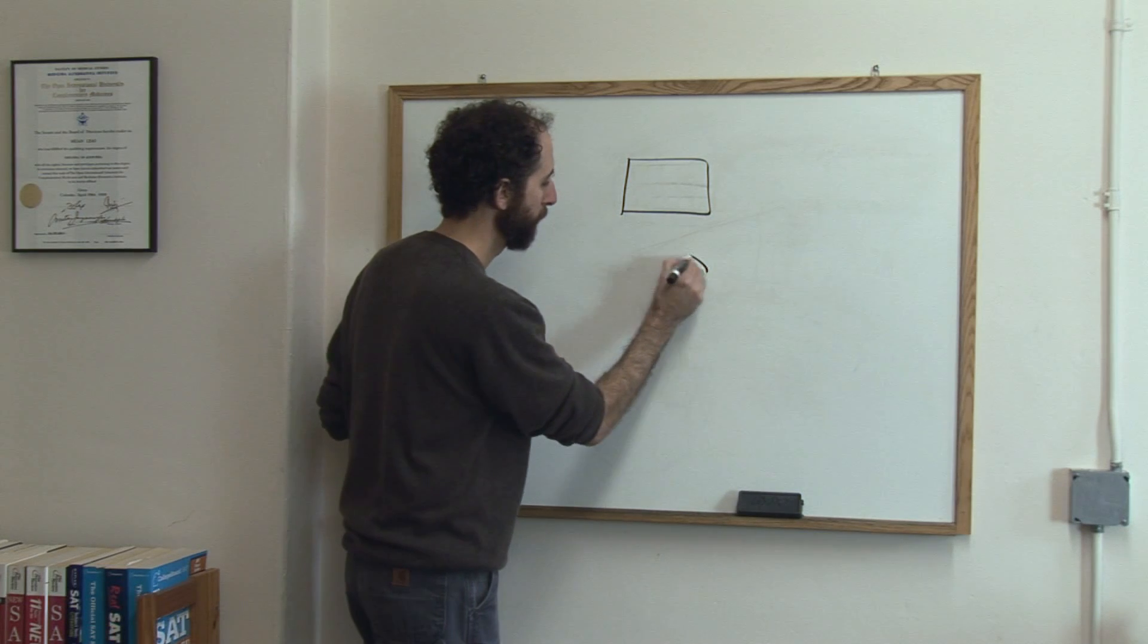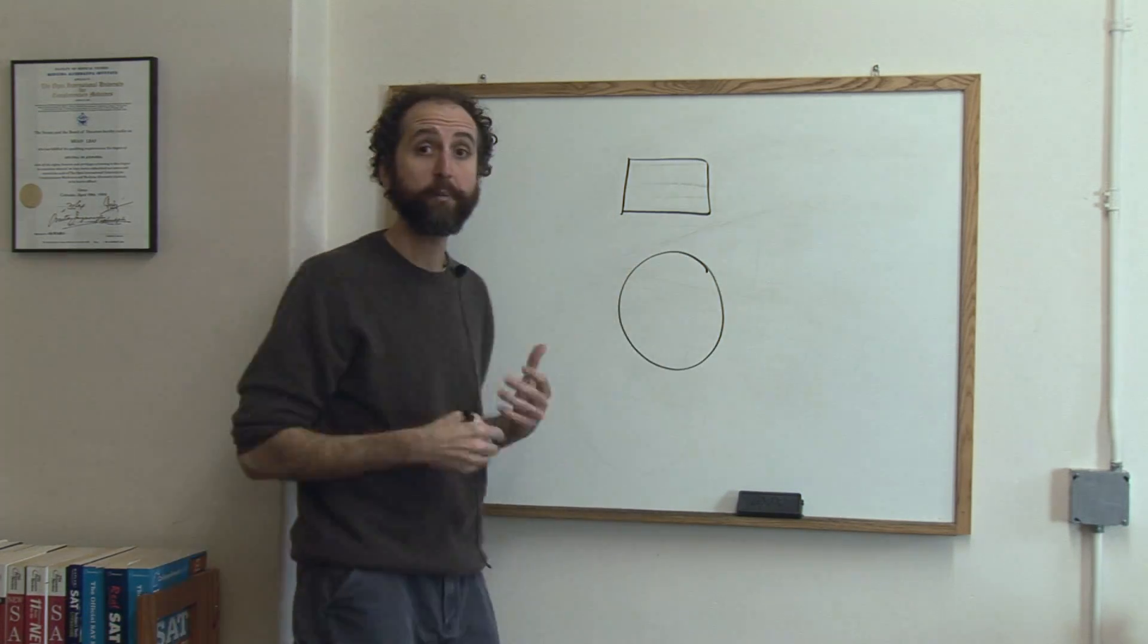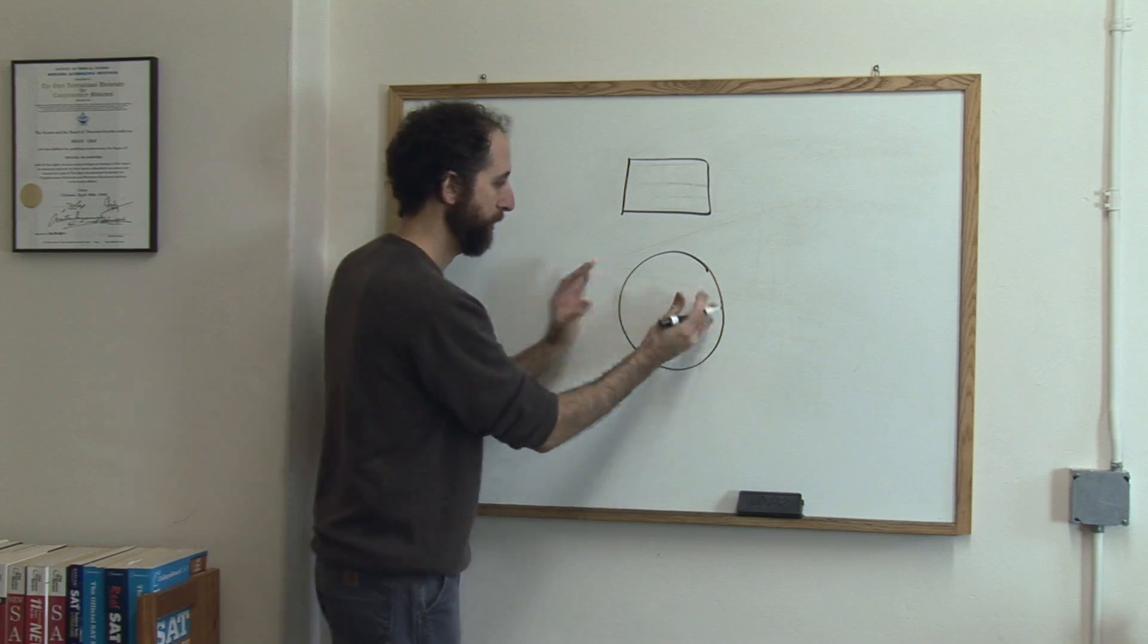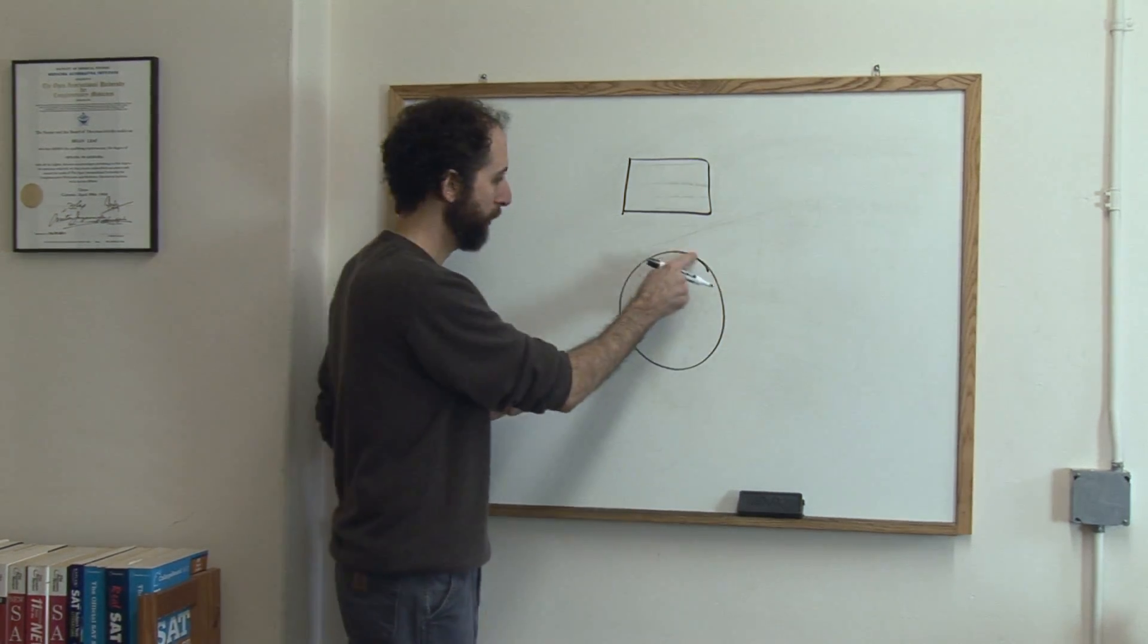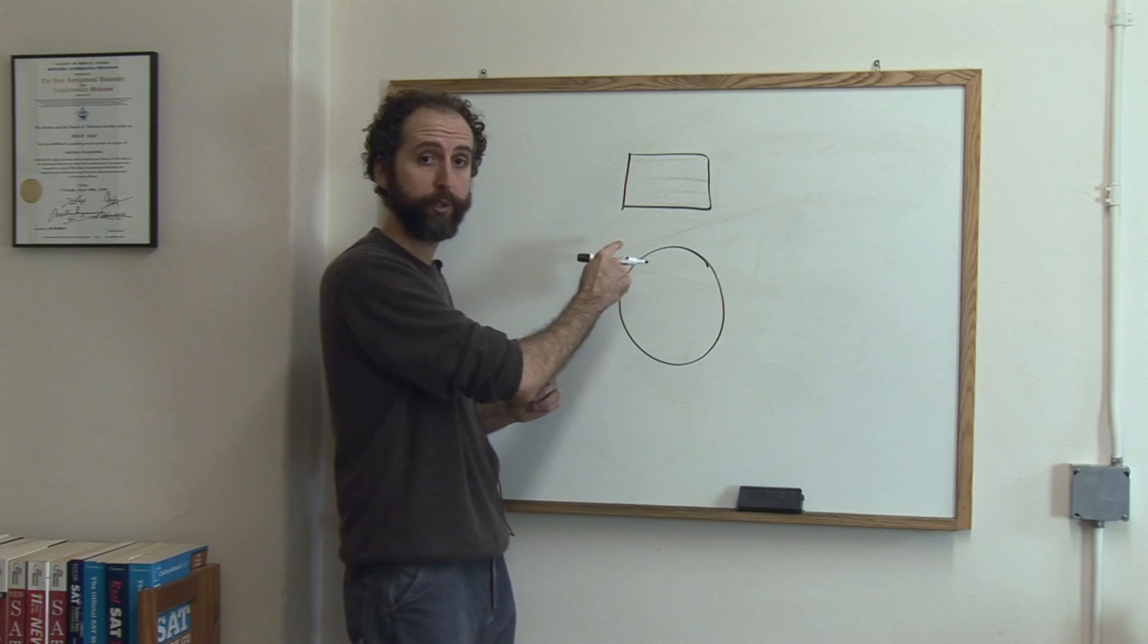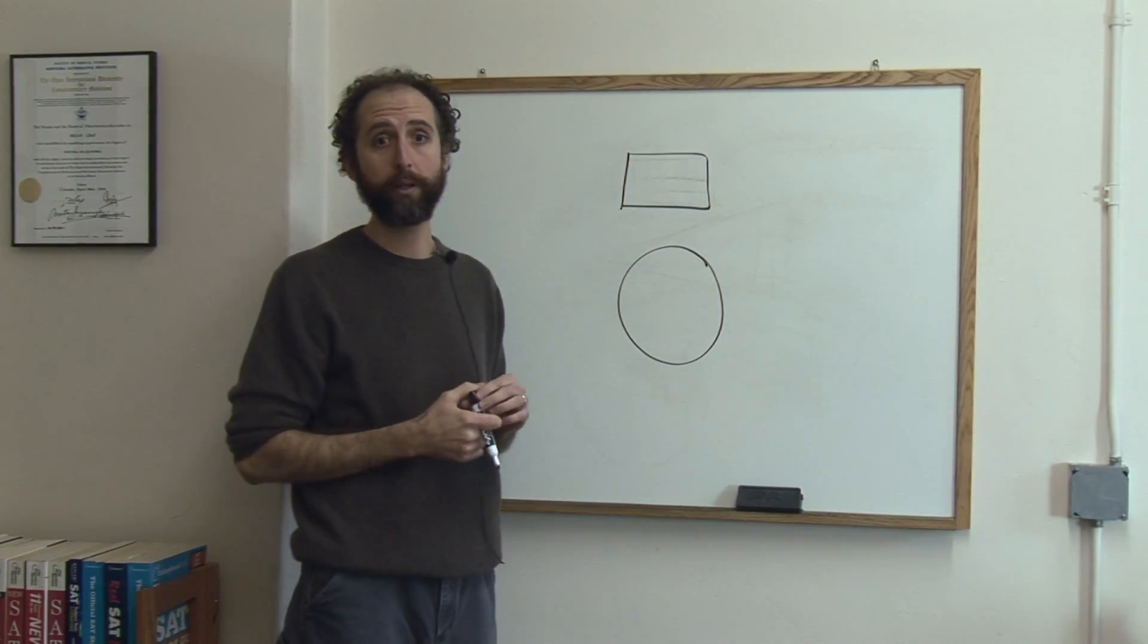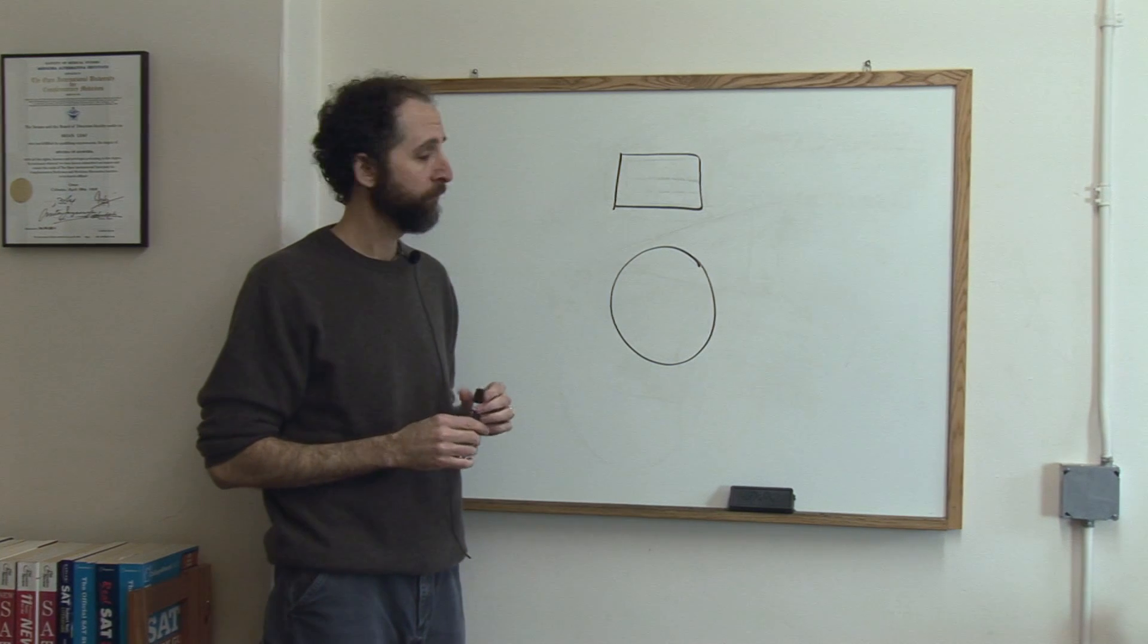So in a circle, when we want to talk about that perimeter, when we want to talk about how long this fence is around this interior, and when we want to know how long this line is or this curving circle is, we actually don't use the word perimeter ordinarily. We call it circumference, but it's the same thing.